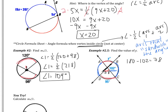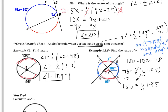Now I'm ready to use the formula. So 78 equals one half of the two arcs that sandwich it — that's Y plus 95. I don't really like the one half, so I'll multiply both sides by 2. The left side becomes 156. On the right side, the one half and two cancel, leaving Y plus 95. If I subtract 95 from both sides, I get Y equals 61 degrees.